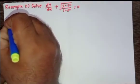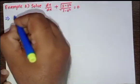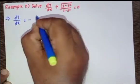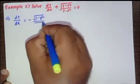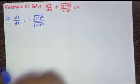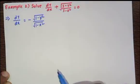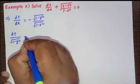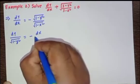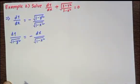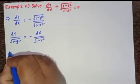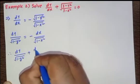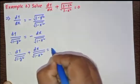Solution: consider this equation. Therefore, dy/dx = -√(1 - y²) / √(1 - x²). Separating the variables, we get dy/√(1 - y²) = -dx/√(1 - x²). Taking the right-hand term to the left side, we get dy/√(1 - y²) + dx/√(1 - x²) = 0.